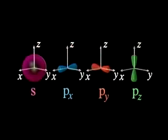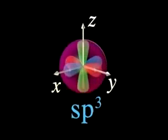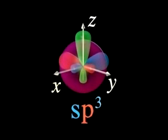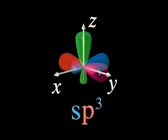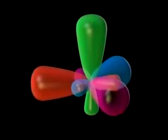Mixing of the S with all three P orbitals results in formation of four equivalent SP3 hybrid orbitals, directed toward the apices of a tetrahedron.